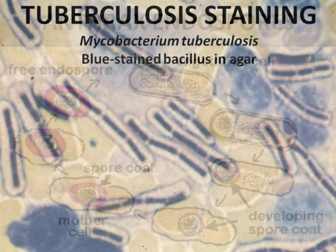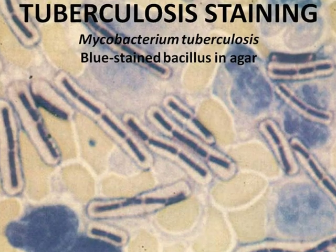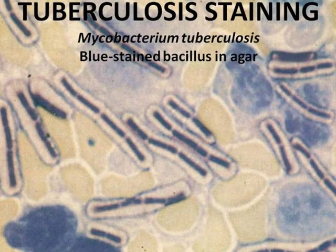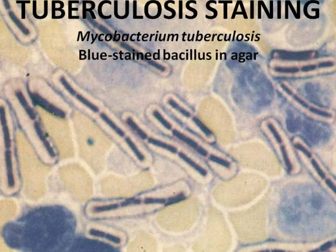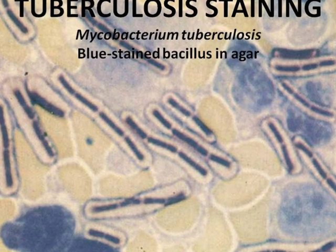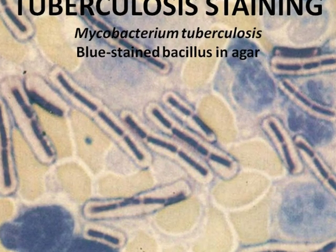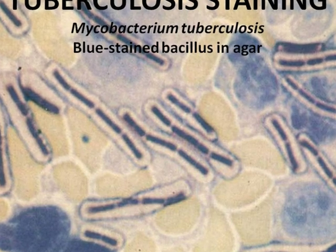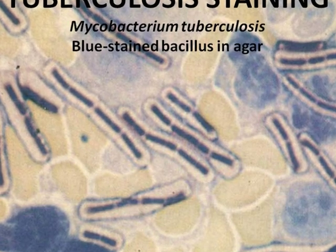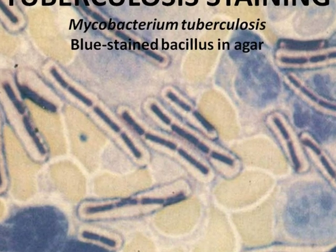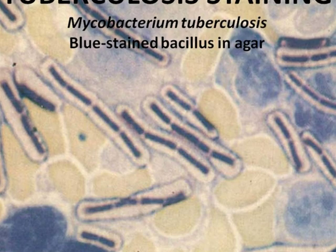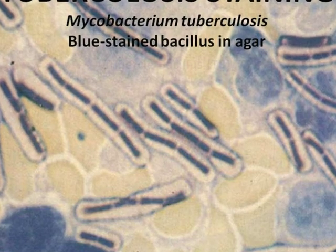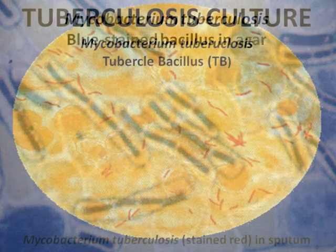In 1882, Koch identified Mycobacterium tuberculosis. To stain the bacilli, he used an alkaline solution of methylene blue and ammonia as a primary stain and a brown counterstain as a counter stain.